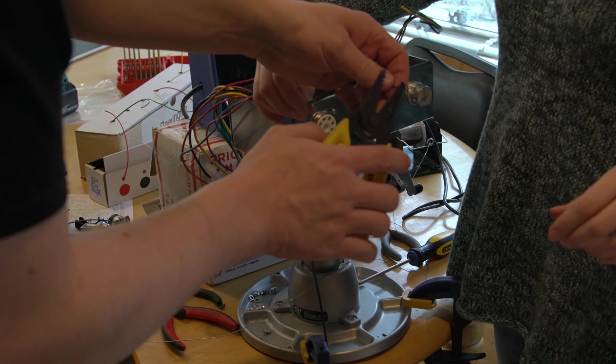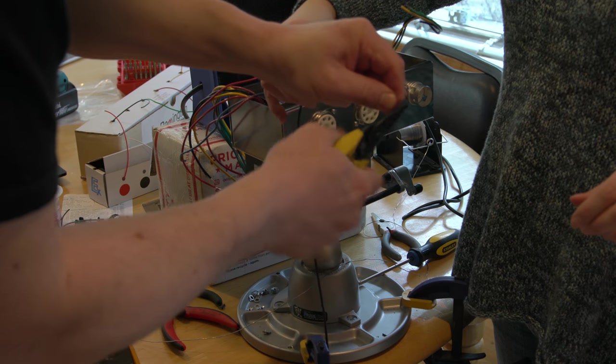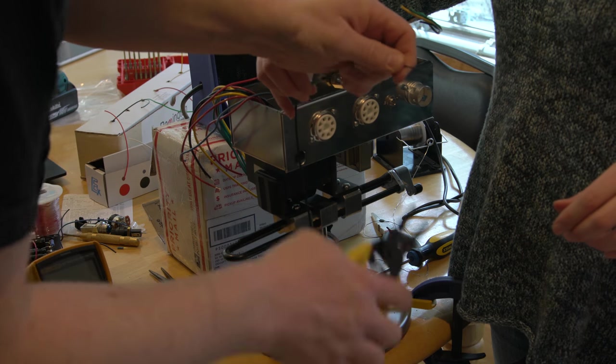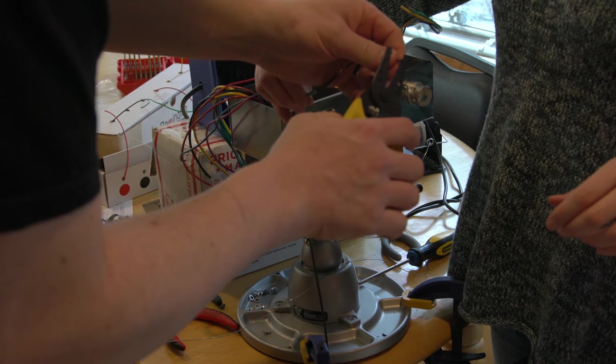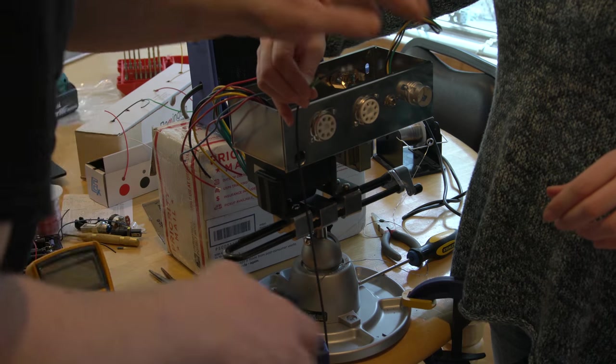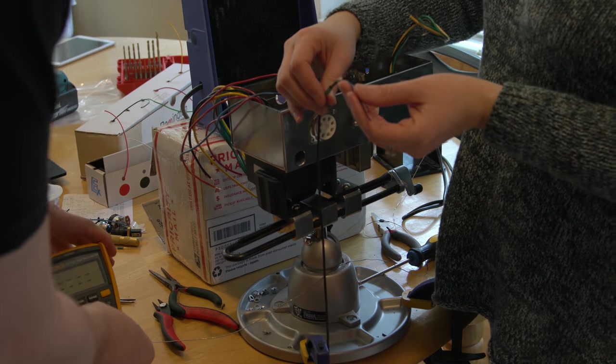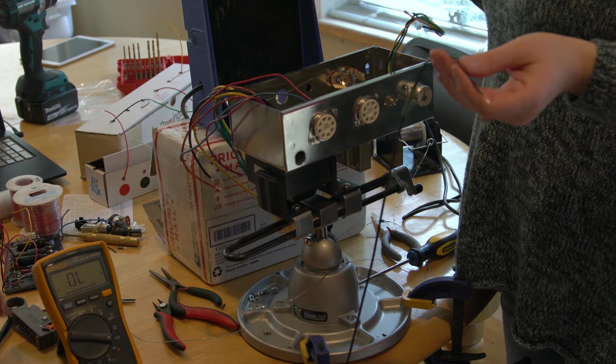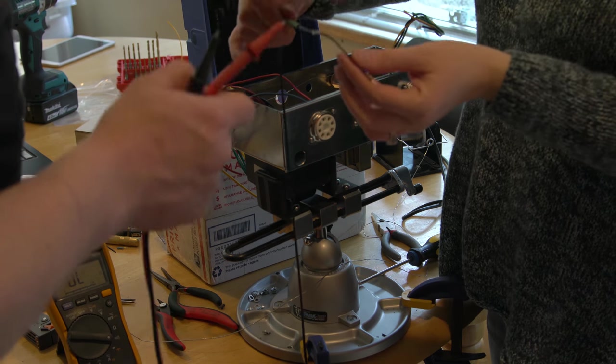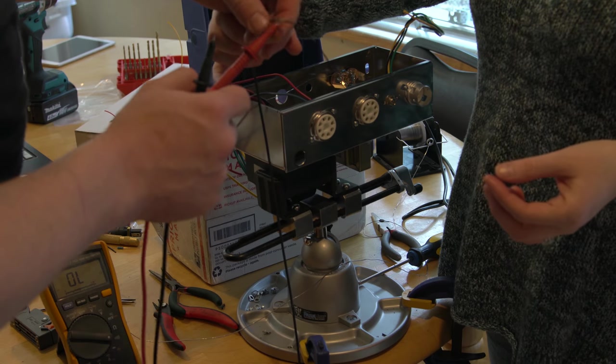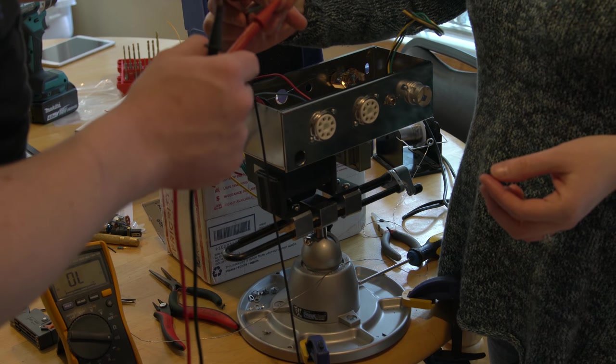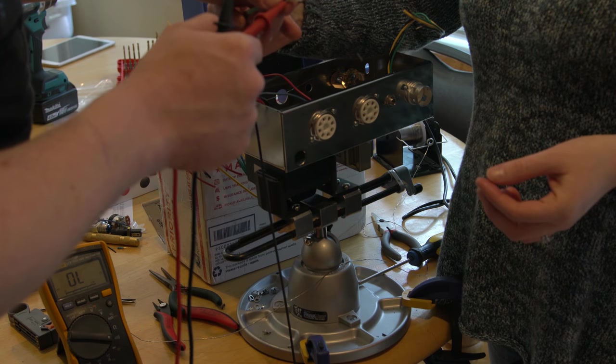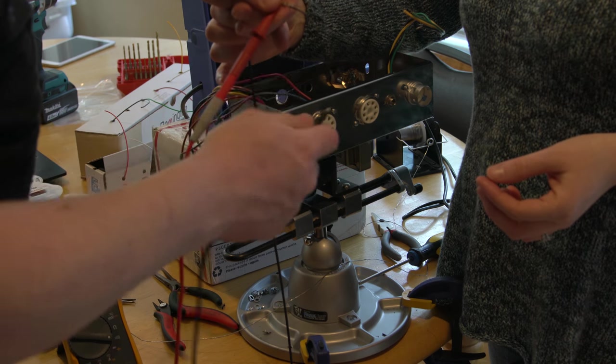I'm actually going to show everybody a trick on how to test your continuity is good. So we're going to put this in continuity mode, and we're going to test to make sure that we can touch this end here where it's not the actual wire. I have to look for the wire and see where it's soldered. So I want to touch the sheathing, and then touch here.